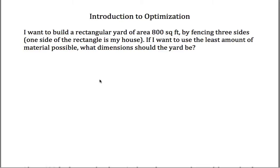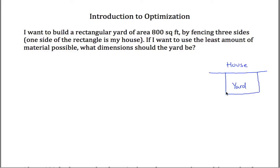In this first example, I want to build a rectangular yard. It often helps to have a picture. I have a house, and I'm building a yard with only three sides because the fourth side is the house. I want the area of this yard to be 800 square feet. In order to use the least amount of material possible, what dimensions should the yard be?